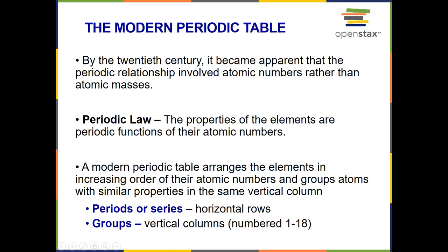Alright, so by the 20th century, it became apparent that the periodic relationship involved atomic numbers, which remember, that is the number of protons in the element, as opposed to the atomic masses. And basically, that led to something called the periodic law, which says that the properties of the elements are periodic functions of their atomic numbers.